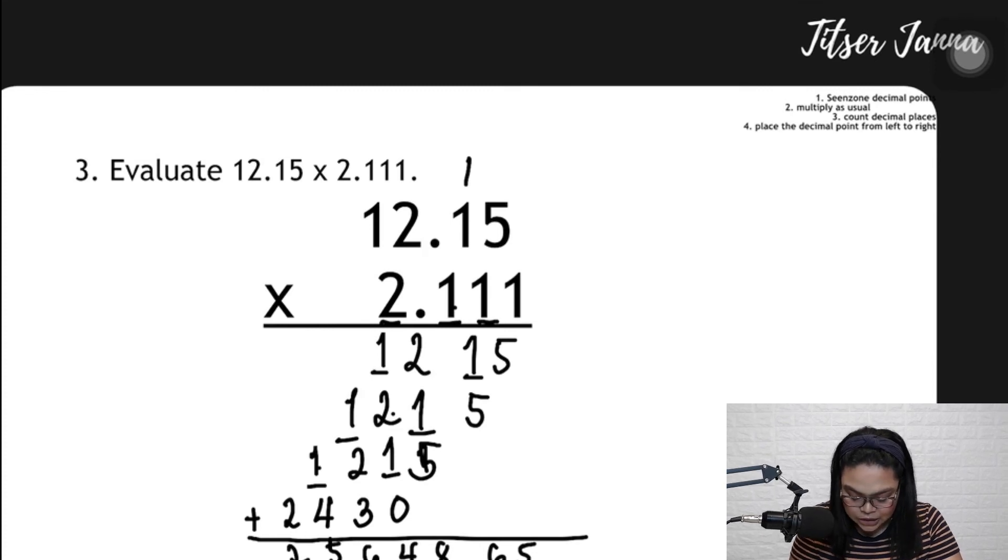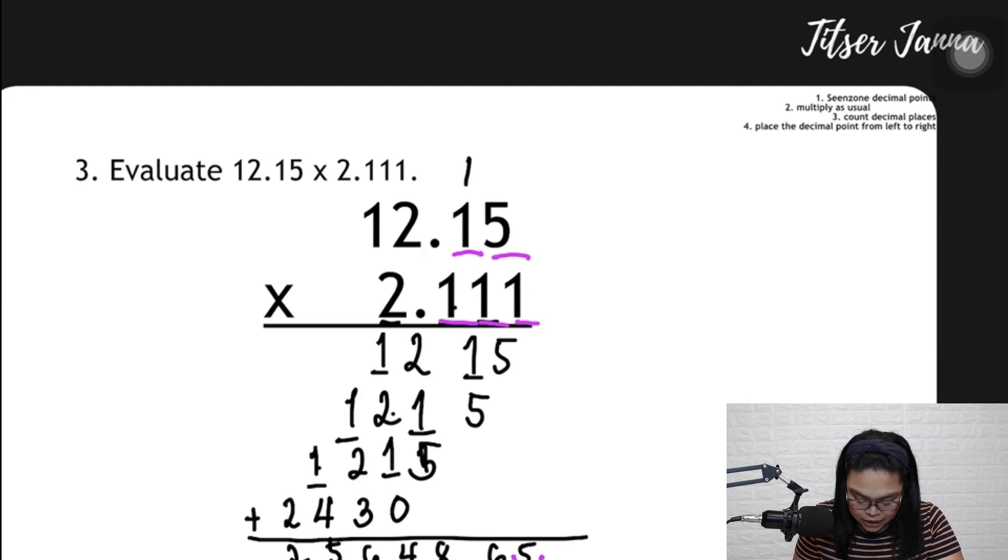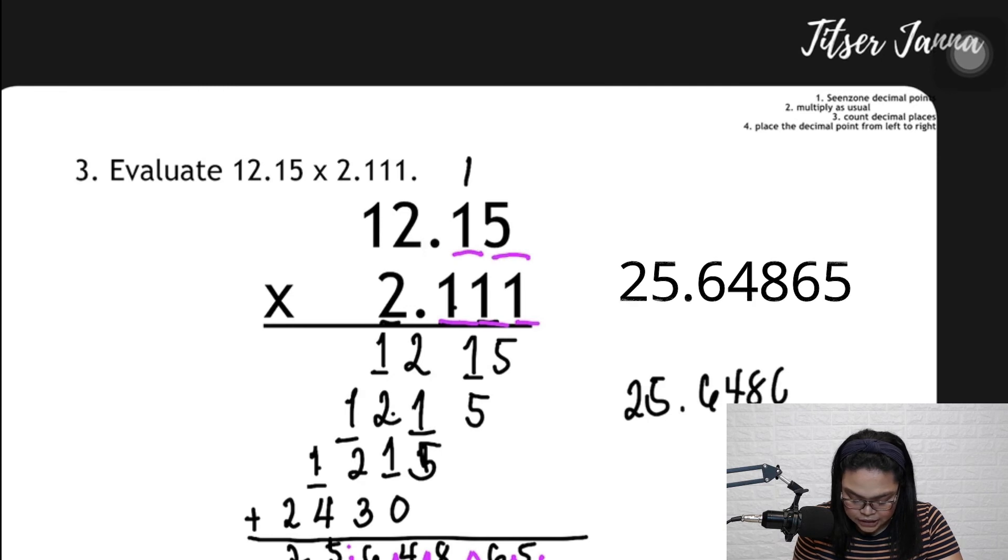How many decimal places do we have? One, two, three, four, and five. So from here, one, two, three, four, and five. So our final answer is 25.64865.